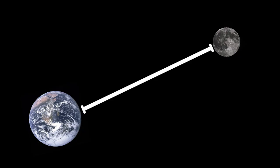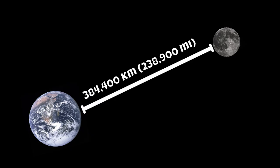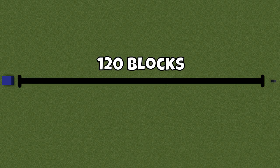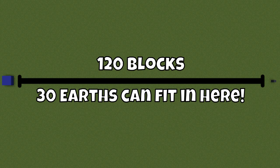But what about the distance? You'd probably be surprised to find out that the distance between the Earth and the Moon is much bigger than most people believe it to be. Its semi-major axis, or average distance from Earth, is about 384,400 kilometers. Visualized in Minecraft, this time with a scale of 1 block corresponding to roughly 3,200 kilometers, the distance from the Earth to the Moon would look like this. Pretty impressive, huh? In this scale, that's a distance of about 120 blocks. It's so big that you can fit 30 entire Earths in between this distance and still have some room left over.